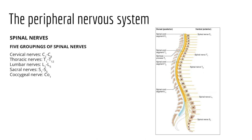Returning to Chapter 13, the spinal cord is associated with 31 spinal nerves identified by their association with the vertebral column: cervical, thoracic, lumbar, sacral, and coccygeal. Except for cervical nerves, each spinal nerve exits inferior to its respective vertebra. There are eight cervical spinal nerves despite only seven cervical vertebrae—C1 exits above the C1 vertebra, between the occipital bone and first cervical vertebra.